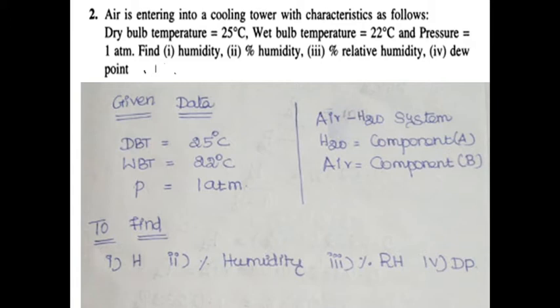The psychrometric chart is only applicable for the air-water system. No pressure data are required here; with the help of the psychrometric chart we are going to discuss all the properties of the air-water system. Given data: dry bulb temperature 25 degrees Celsius, wet bulb temperature 22 degrees Celsius, total pressure 180 mmHg. The system is an air-water system where water is component A and air is component B.